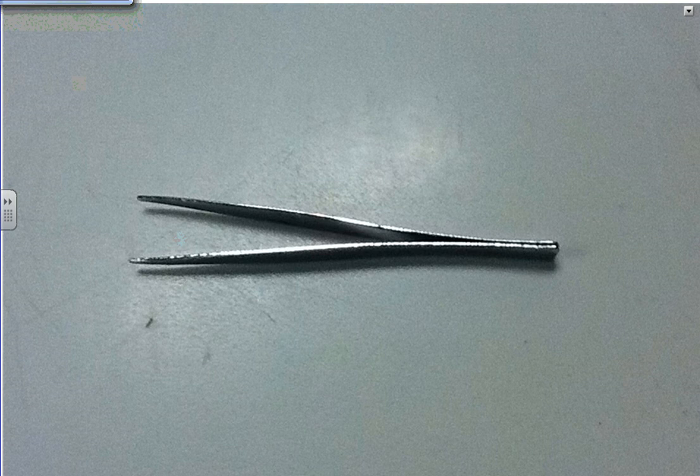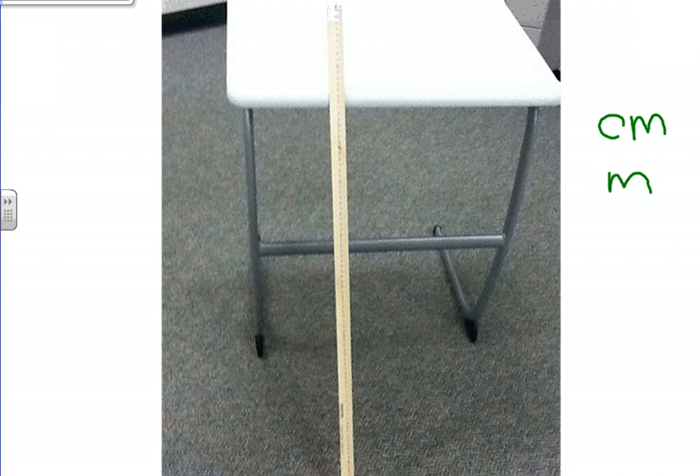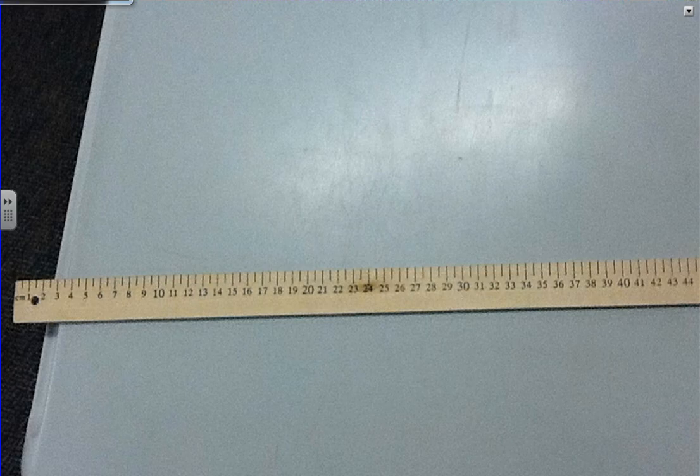Moving on to the next page, page number two contains an item that we use to measure both units of centimeters and meters. If you guessed the metric ruler or meter stick, you are correct. That is item number two, meter stick. A little bit closer look, you can see centimeters.